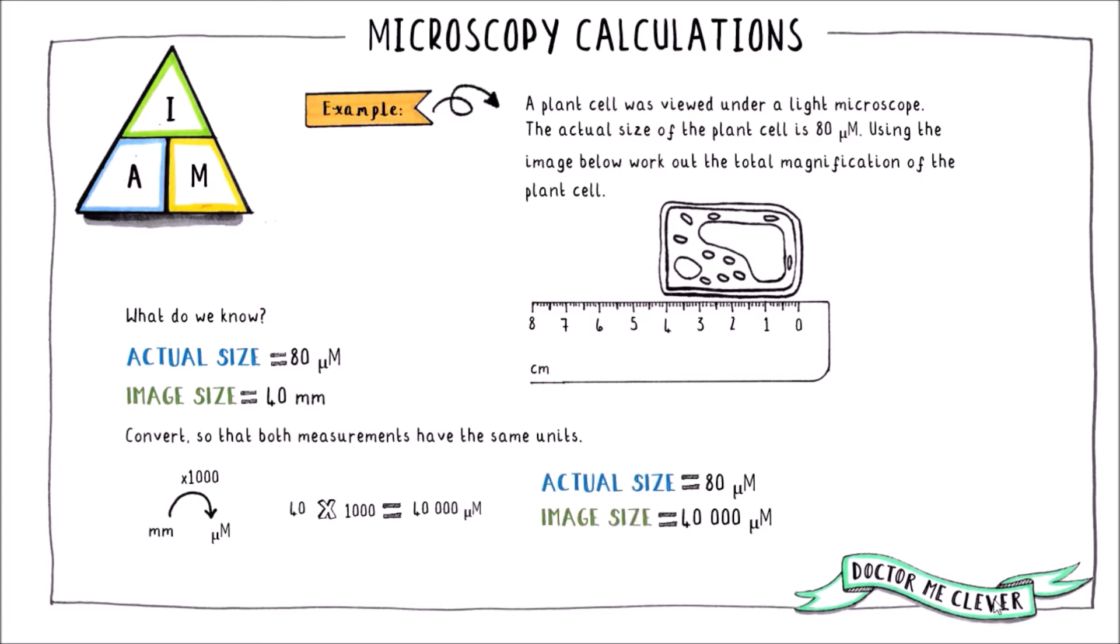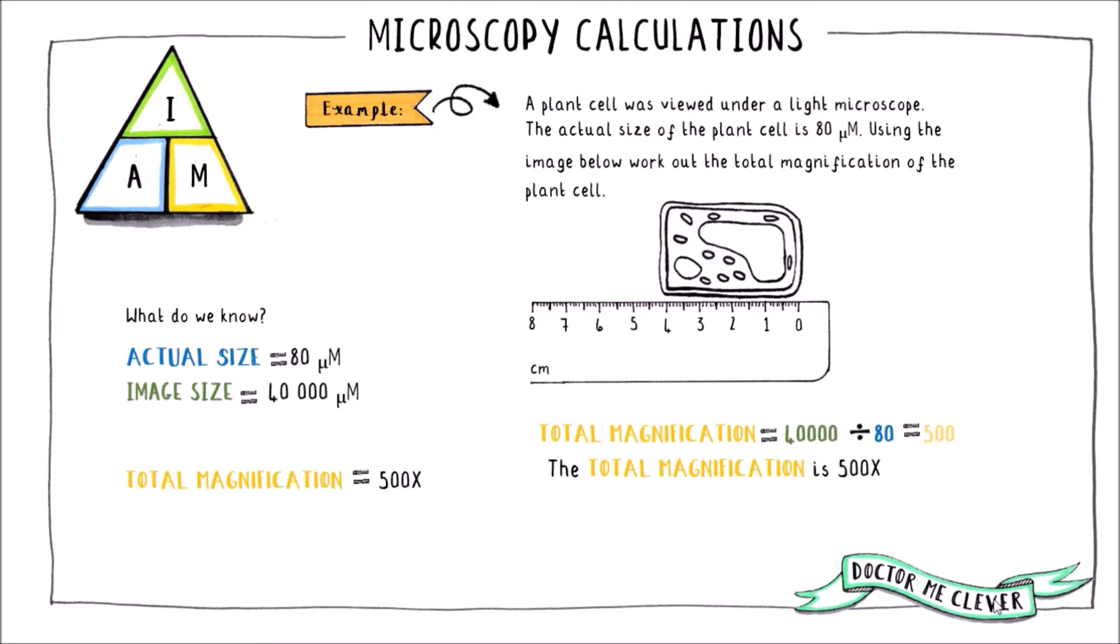Then we can take the IAM triangle and plug the numbers in. So we take the image size of 40,000 micrometers and divide it by the actual size of the specimen 80 micrometers. This equals the total magnification which is 500 times.